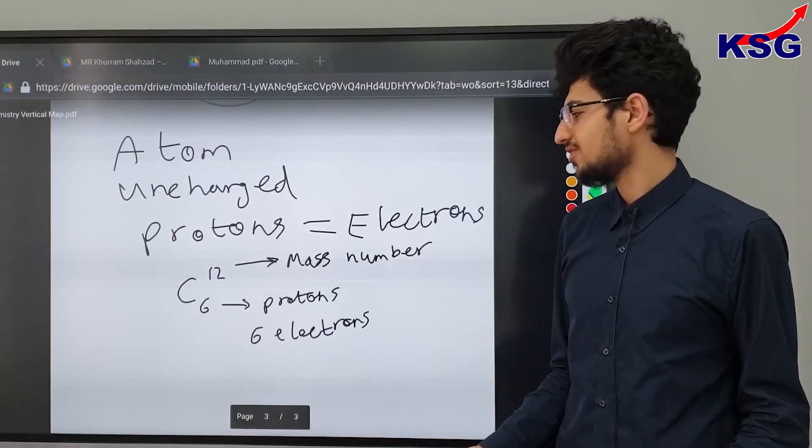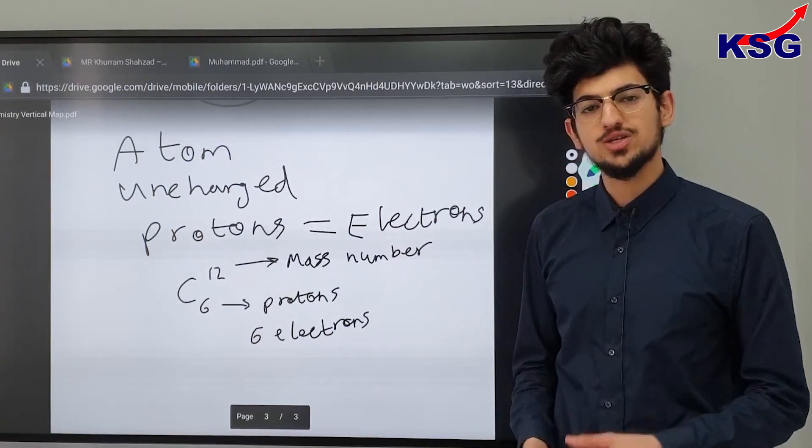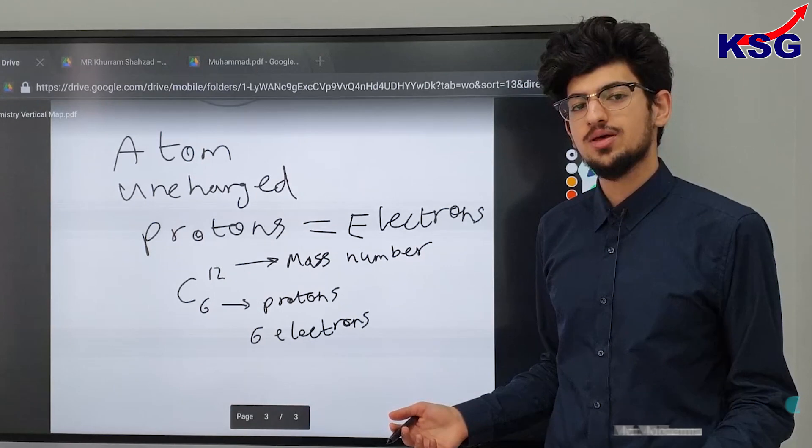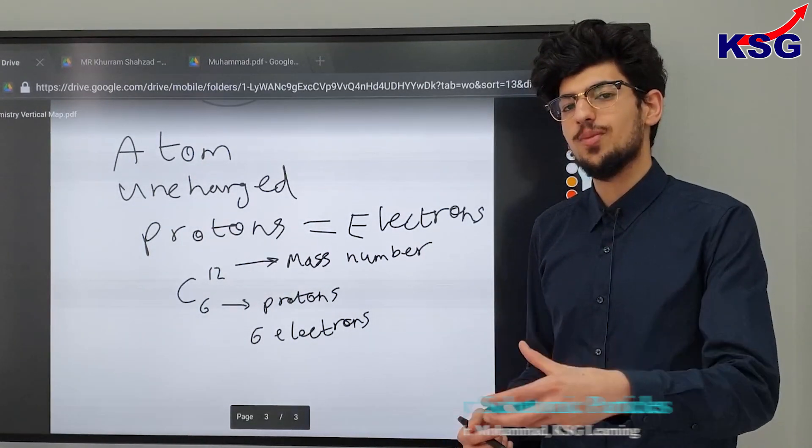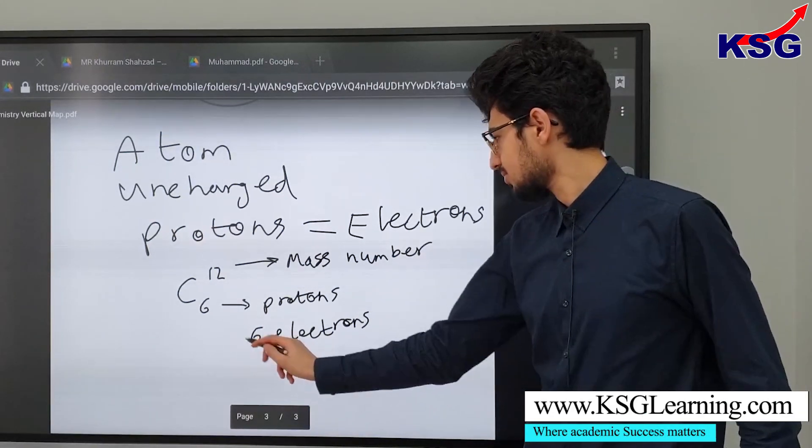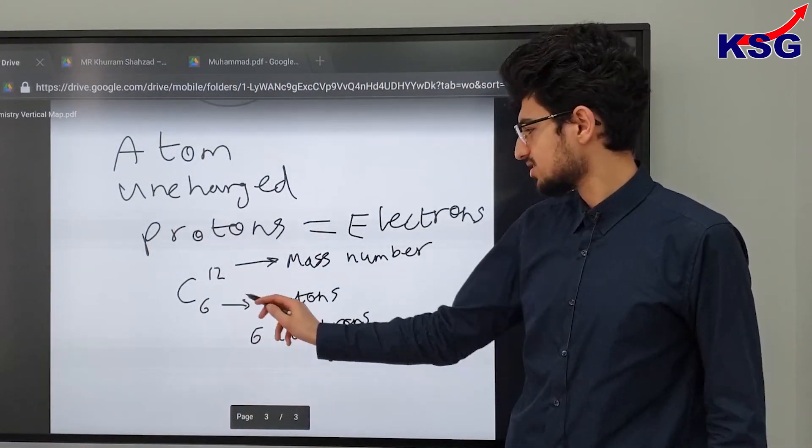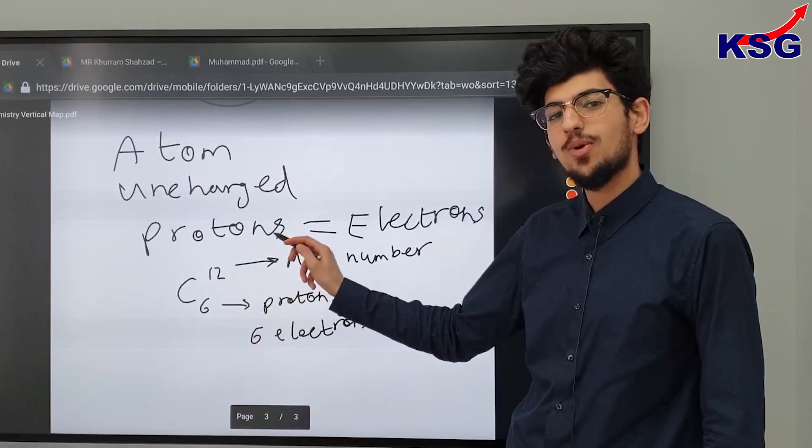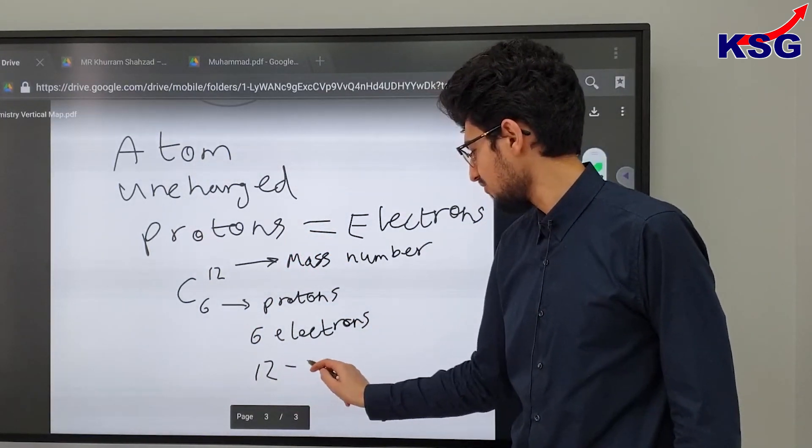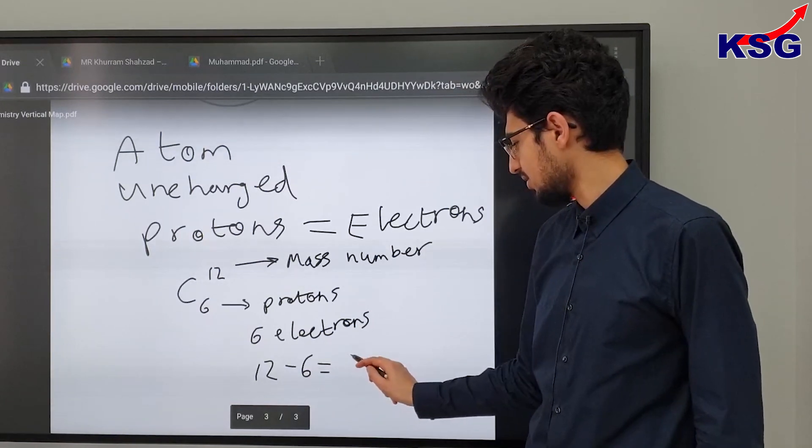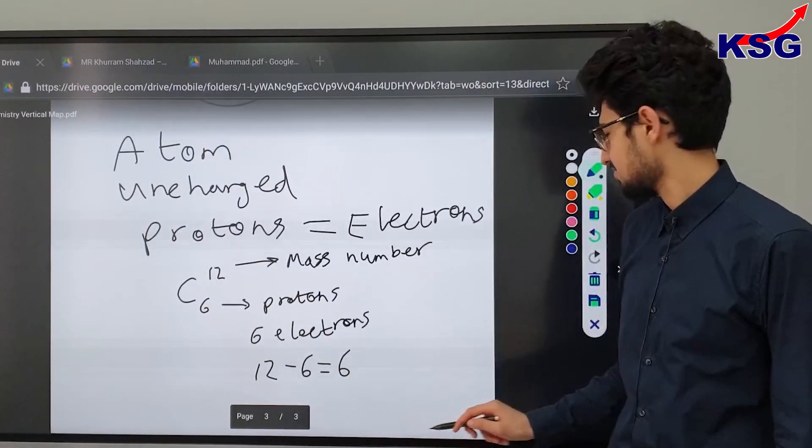Since we already know that the mass of protons is one, and there are six of them, that means that protons are contributing six in the overall mass of the carbon. And therefore, what we could do is we could subtract six to find out how much the neutrons are contributing. So we do 12 minus six, which is going to be equal to six.